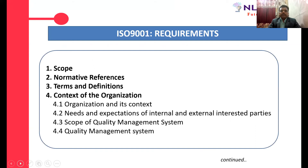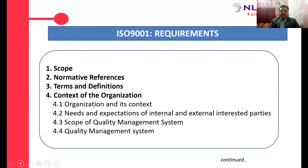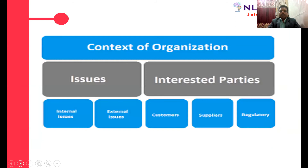Briefly running through the different requirements of ISO 9001: it has 10 sections, with the auditable clauses starting from section four. Section four talks about the context of the organization, wherein you deal with the needs and expectations of the different internal and external interested parties. You define the scope of the quality management system and the different activities which you plan to implement in the standard.